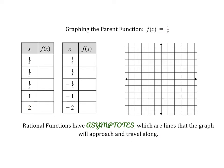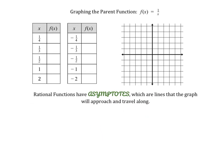Let's start with x equals 1 fourth. 1 over 1 fourth — remember, when you're dividing by a fraction, it's actually multiplying by the reciprocal — so 1 over 1 fourth is 4. That means 1 over 1 third is 3, 1 over 1 half is 2, 1 over 1 is 1, and 1 over 2 is 1 half.